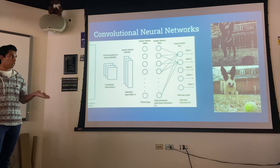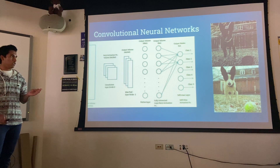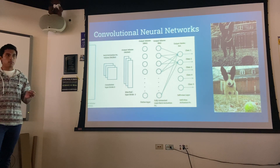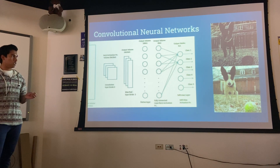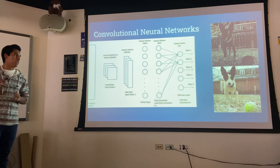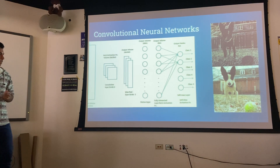What the neural network does is it breaks down the convoluted image of the dog into its individual pixels, reads those pixels, and then moves to the next layer in the neural network.